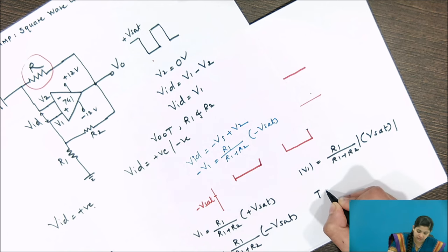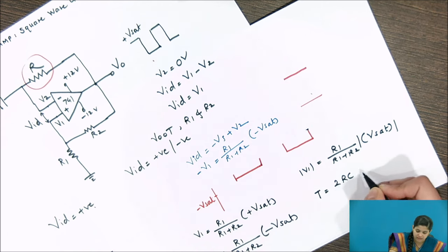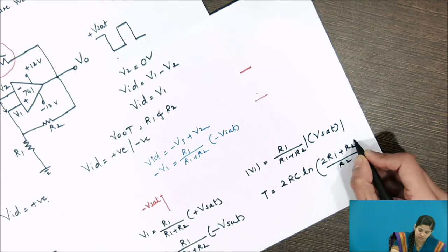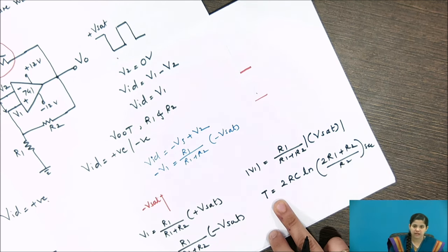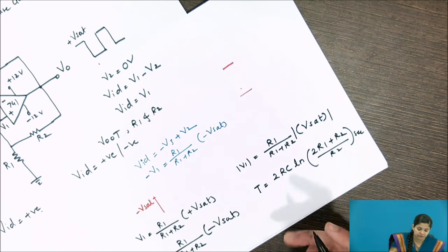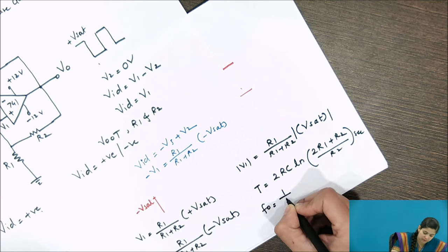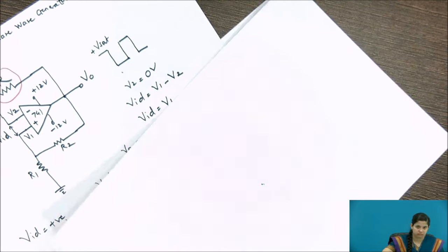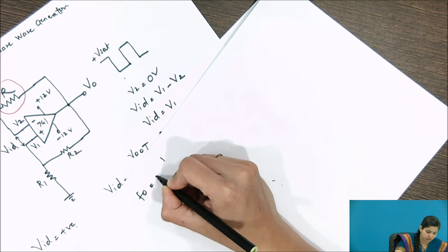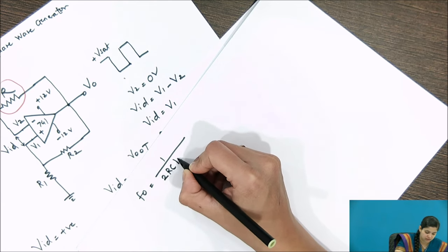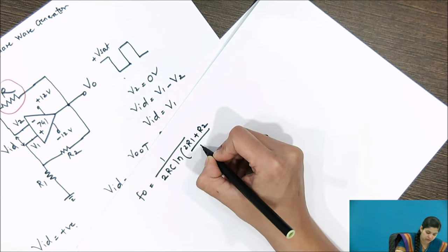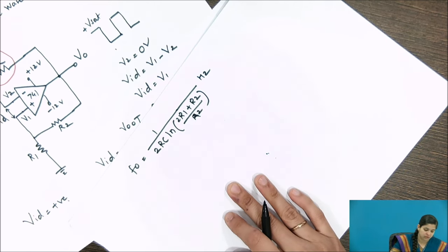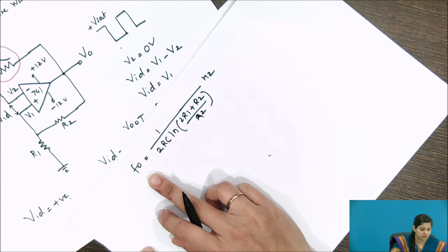The time period T is given as: T = 2RC · ln((2R1 + R2) / R2) seconds. This is the time period of the square wave output. The frequency of the square wave is 1/T, which can be written as: f = 1 / (2RC · ln((2R1 + R2) / R2)). This is the frequency of the square wave output.